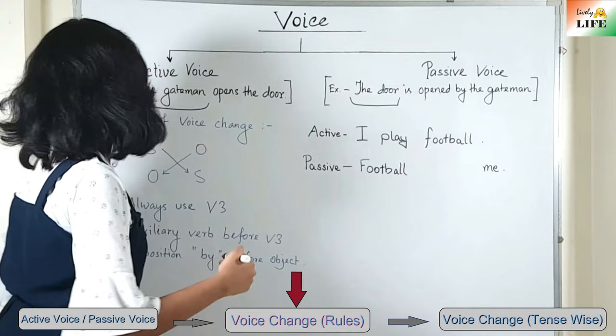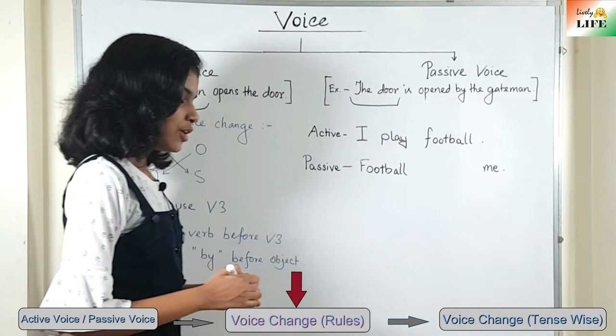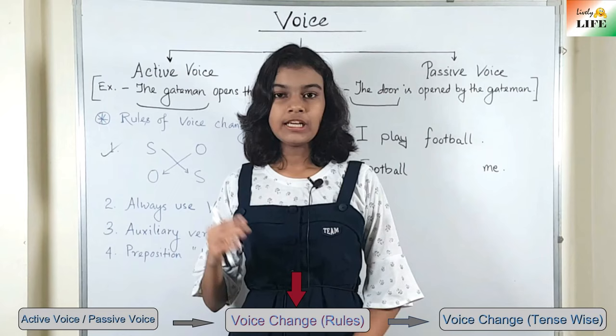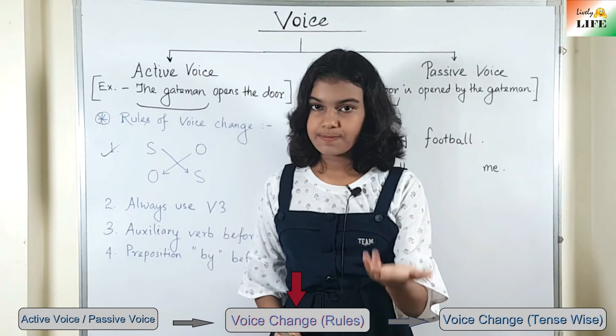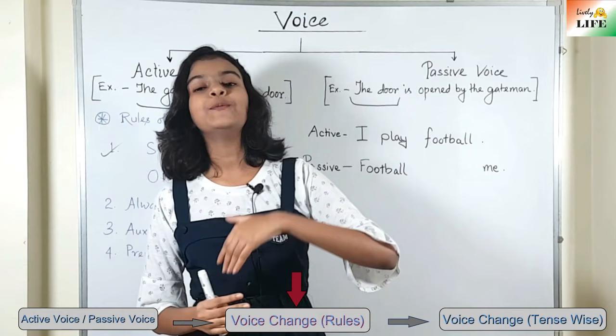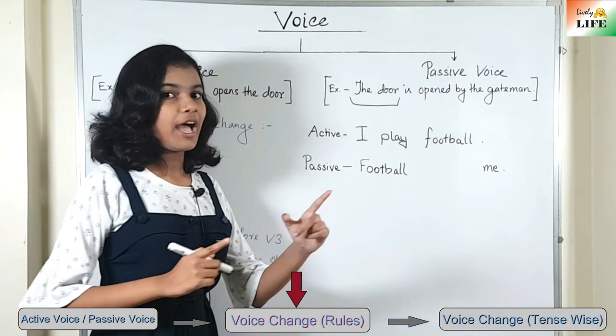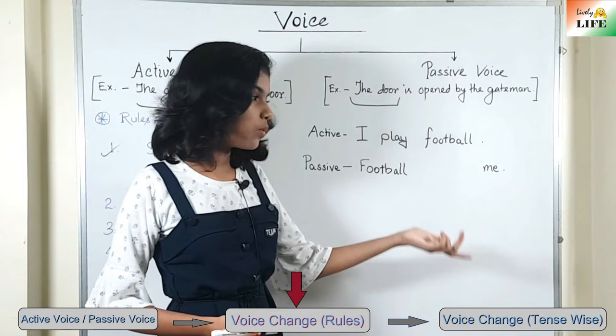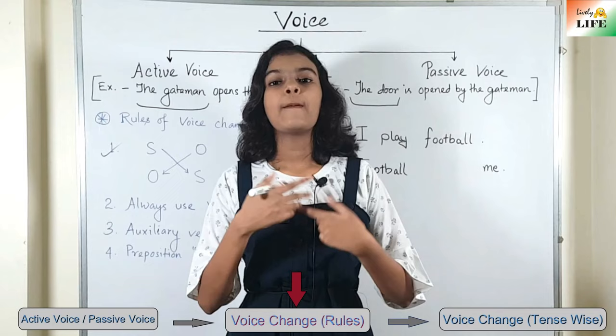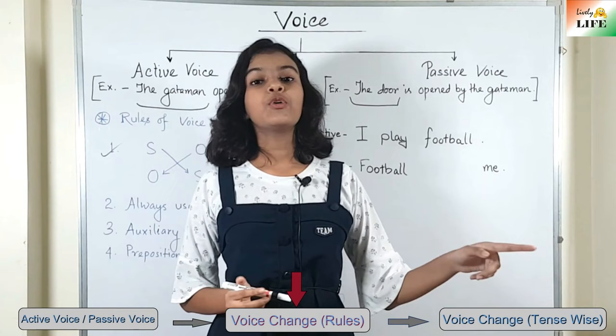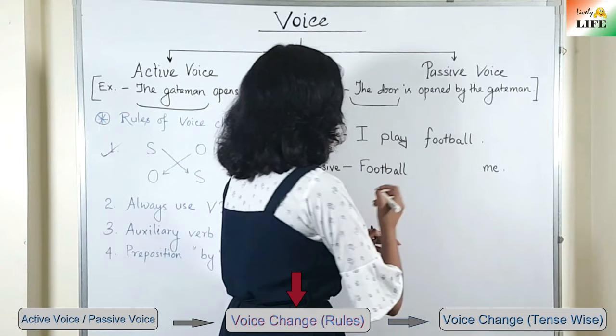The second rule: always use V3 — the past participle form of the verb. In tenses, we learned there are three forms of verb: first (present), second (past), and third (past participle). When converting to passive voice, we always use the past participle (V3) form. In the sentence 'I play football,' the verb is 'play.' The V3 form of 'play' is 'played' (P-L-A-Y-E-D). So in passive voice, we use 'played.'